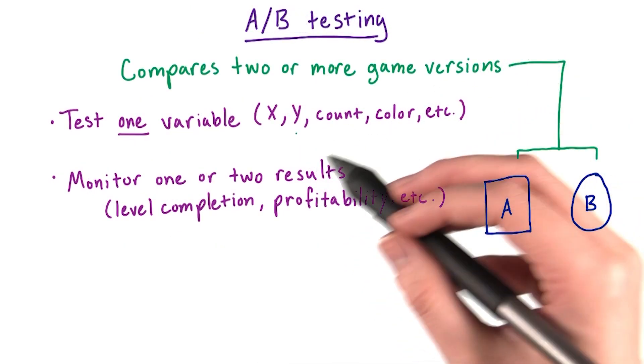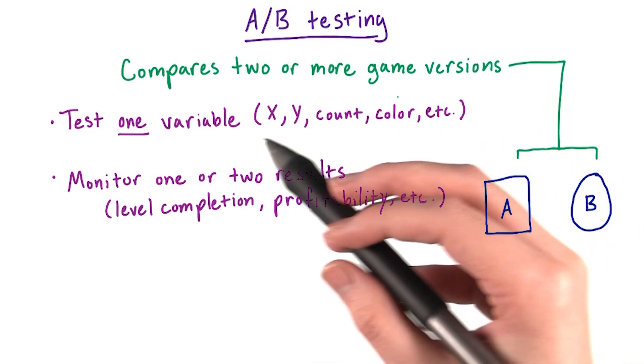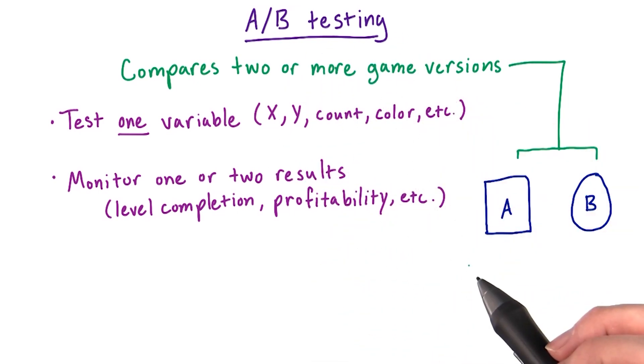Let's test out different levels of difficulty and see how users respond. To see how players respond to different scenarios, we can use A-B testing, which is a method of testing that compares the performance of two or more game versions, A and B, and so on.